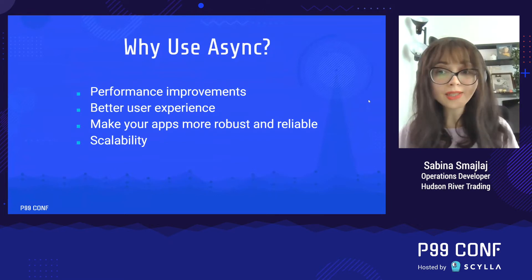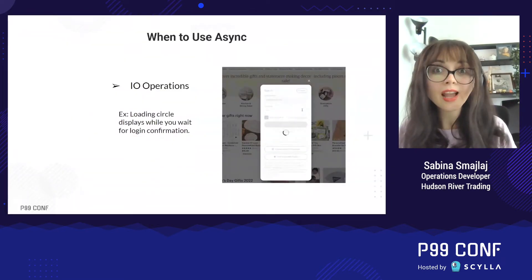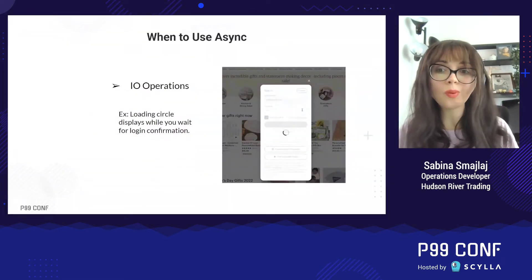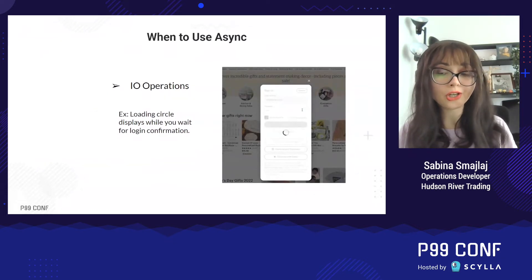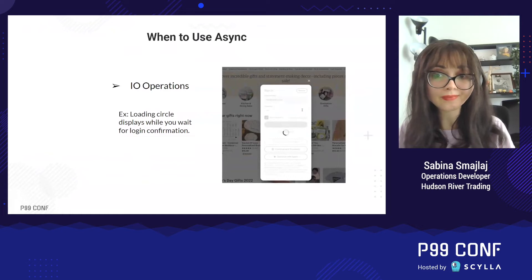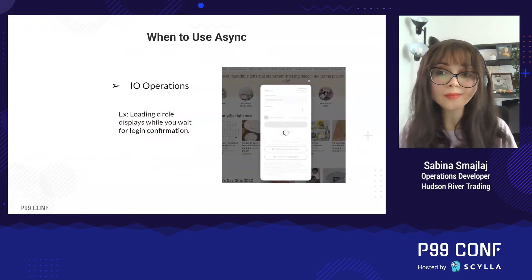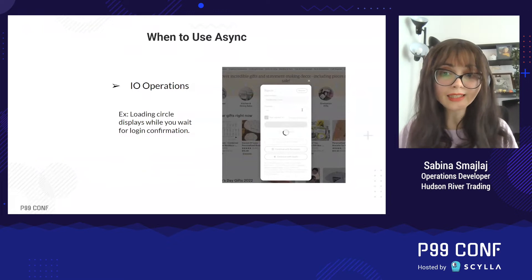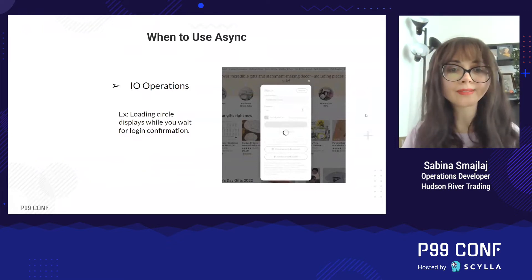So what scenarios are best for using async? The first is while waiting for IO operations. Let's say you are trying to log into Etsy. Instead of the website freezing until your credentials can be confirmed, Etsy lets you see an animated loading circle so you know that something is happening.